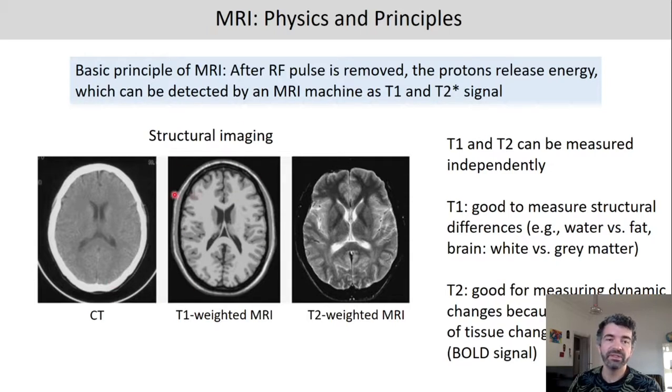This is the T2-weighted MRI. This is CT as a comparison. So T1 is good to measure structural differences. For example, the brain structure, like where do you see white matter and gray matter. This is also what you would use if you want to get an image of the knee. We can see differences between white and gray matter because the fat or water content in these two matters are different. And the T2 signal is great for measuring dynamic changes because the homogeneity of the tissue changes with time and with different activity levels of the brain because the oxygenation changes.